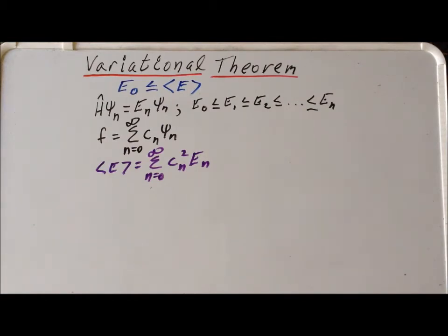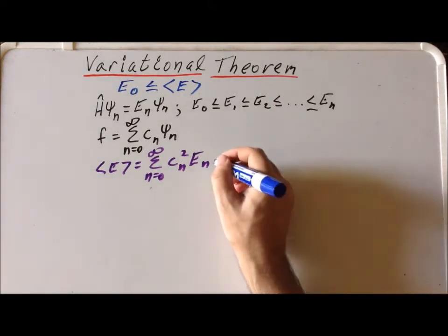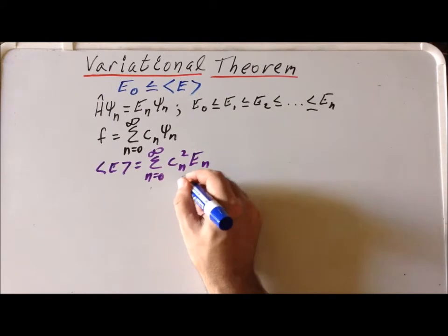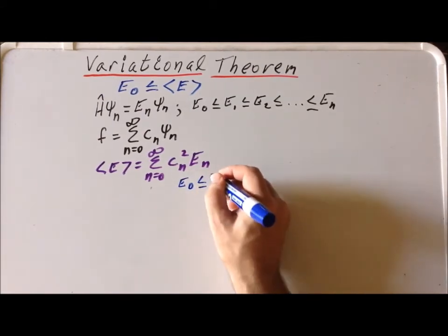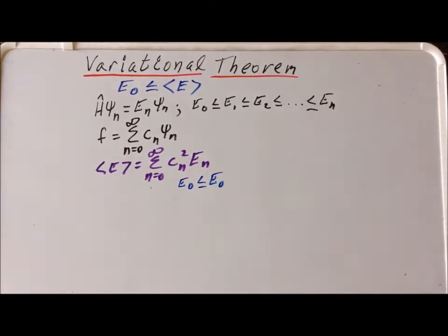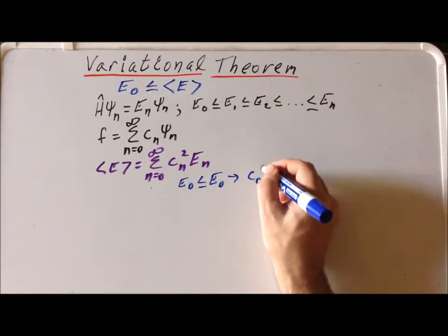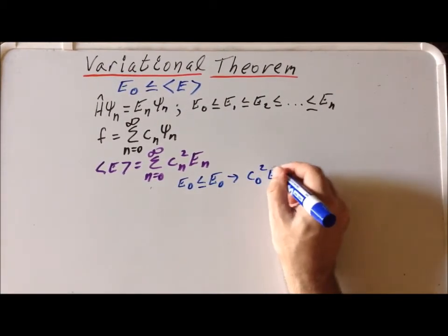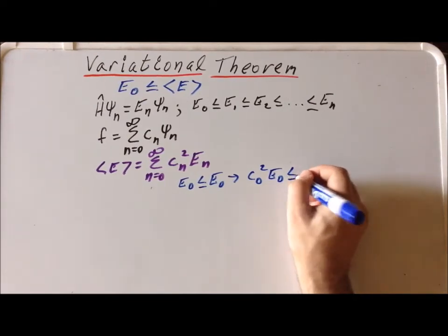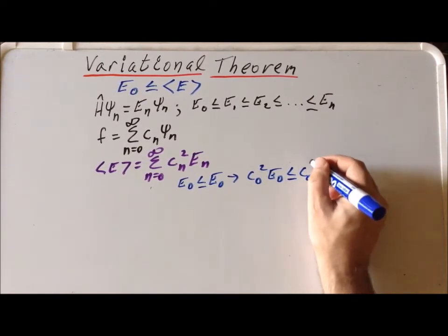Now we can proceed similarly to how we did before. We assume at first that e sub 0 is less than or equal to c sub 0 squared times e sub 0.